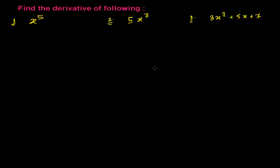We need to figure out which rule to apply — whether the power rule or something else. The question clearly says we don't have to use the first principle method, the definition method. That's great because that is a lengthy method. We can easily use shortcut rules like the power rule, since each term has a certain power.